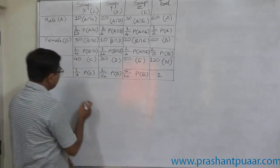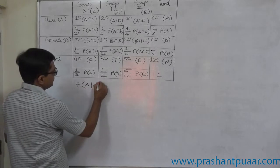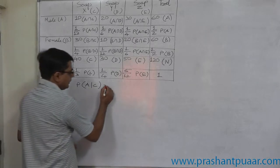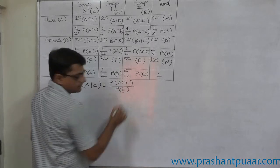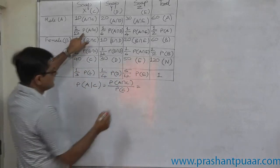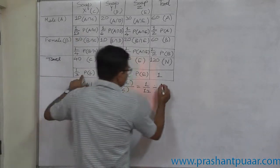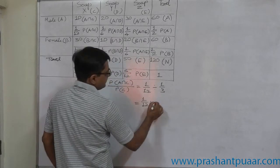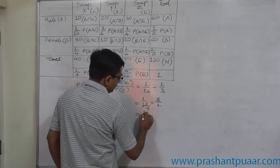Let us calculate one conditional probability: P(A|C). The formula is P(A∩C) divided by P(C). P(A∩C) is 1/12 and P(C) is 1/3, so 1/12 multiplied by 3/1 gives an answer of 1/4.